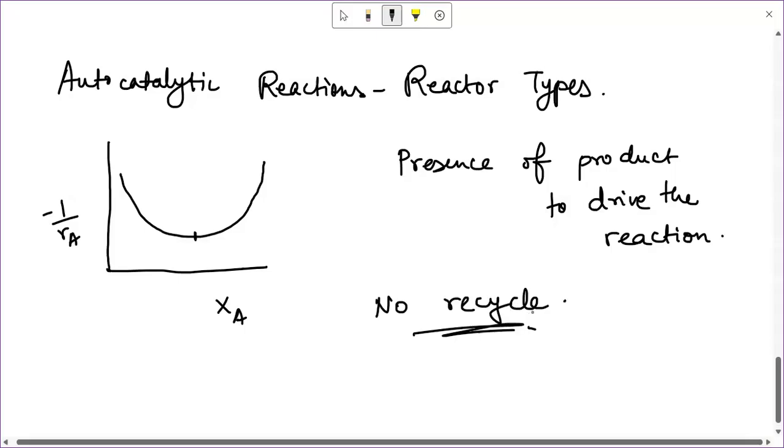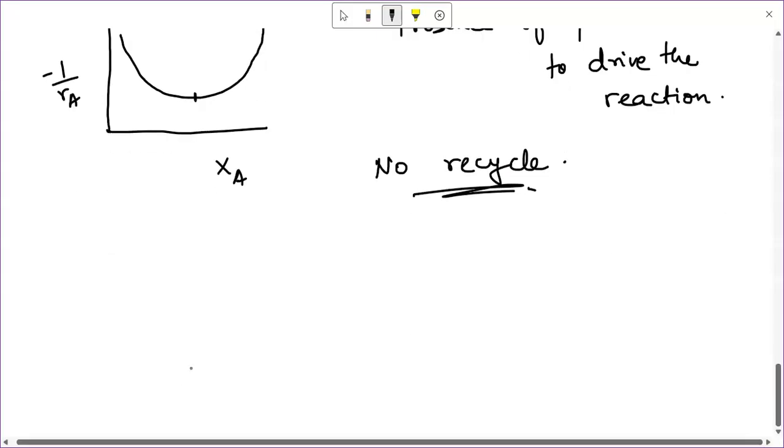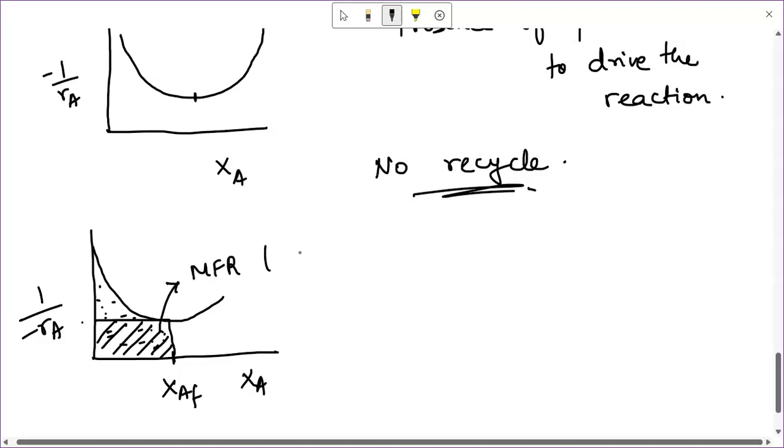So first, let us take the case that we are not working with any recycle. Let's say we have a rate curve xA by 1 minus rA that looks like this, and I want a final conversion of xAf over here. Now if I use a plug flow reactor, then this area under the curve would give me the volume. But if I use a mixed flow reactor, I would get a much lower volume if you see graphically. So for lower conversions, I would prefer to go with mixed flow reactors when recycle is not in the picture.